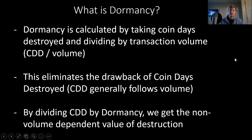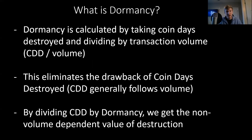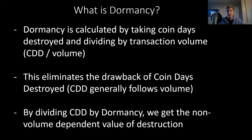What is dormancy? Dormancy is calculated by taking Coin Days Destroyed and dividing that value by transaction volume. So we're getting the raw, non-volume-dependent value of destruction because we're eliminating the volume component by dividing by it. This eliminates the drawback that Coin Days Destroyed has, which is that it generally follows volume. When we're looking at the age of coins being spent, there are other metrics we can look at, which we'll discuss in future videos. Dormancy is the non-volume-oriented version of Coin Days Destroyed, which eliminates that drawback.